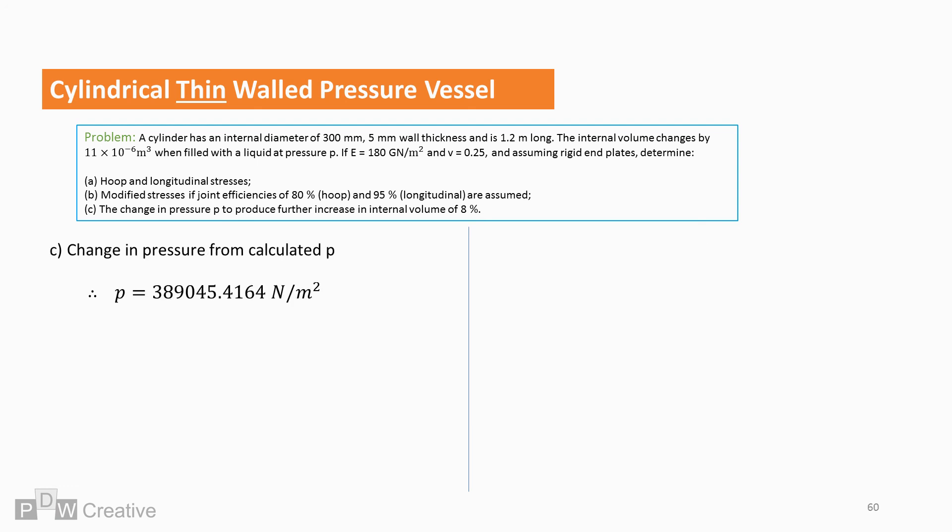The final requirement for part C is the pressure change from an 8% volume increase. If we take the pressure previously calculated, applying an 8% drop gives us a change of 0.311 meganeutons per metre squared.